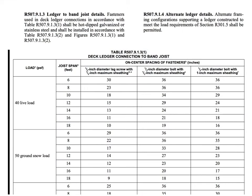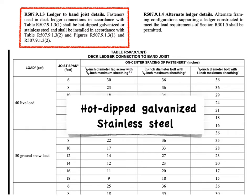We'll start by looking at this section here that outlines the requirements for the ledger to band joist connection. The first requirement is that the fasteners be either hot dipped galvanized or stainless steel. That's easy and from here it's going to get a little bit messier.